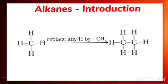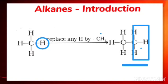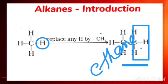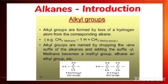Considering the first member methane — when we replace one hydrogen of methane and attach a CH3 group in its place, we get ethane, the second member of this family. So the number of carbons increases by replacing one hydrogen with an alkyl group. Alkyl groups are formed by the loss of a hydrogen atom from the corresponding alkane.